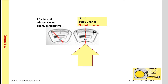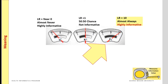Therefore, even if we know that the predictor has occurred, we know no more information about the likelihood of the dependent variable than we did before. A ratio of ten means the predictor increases the odds of the dependent variable by tenfold. Notice how the further the ratio is from one, the more informative it is.